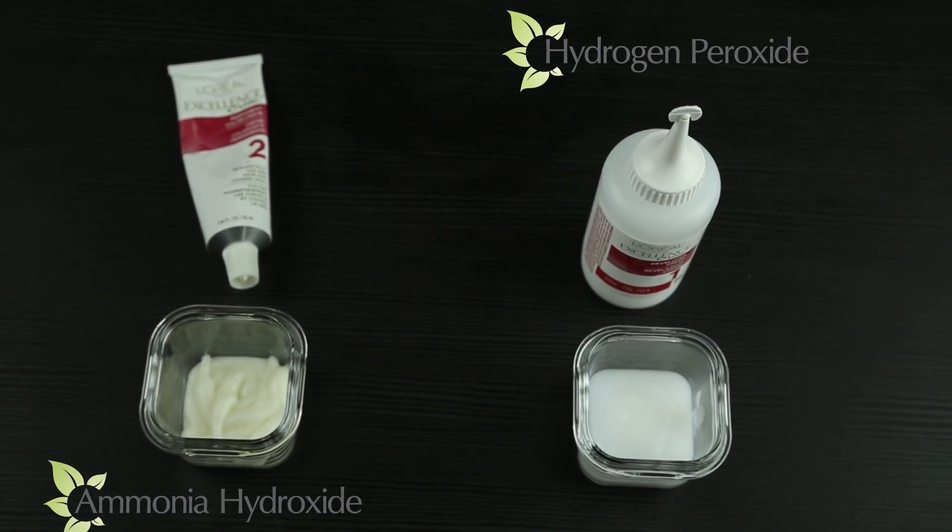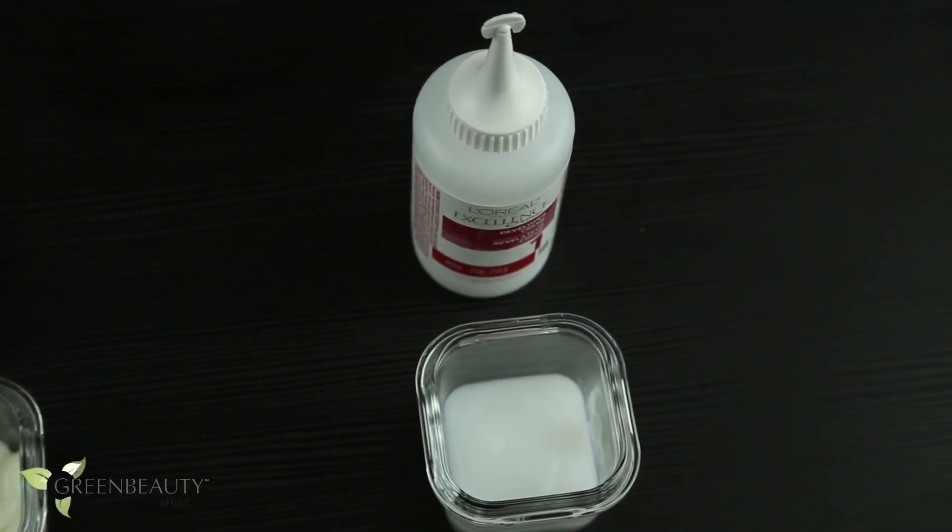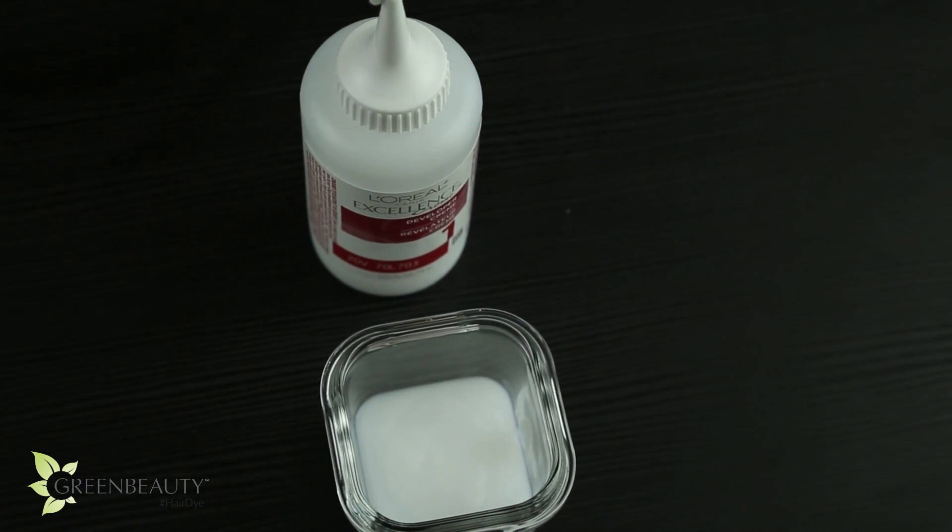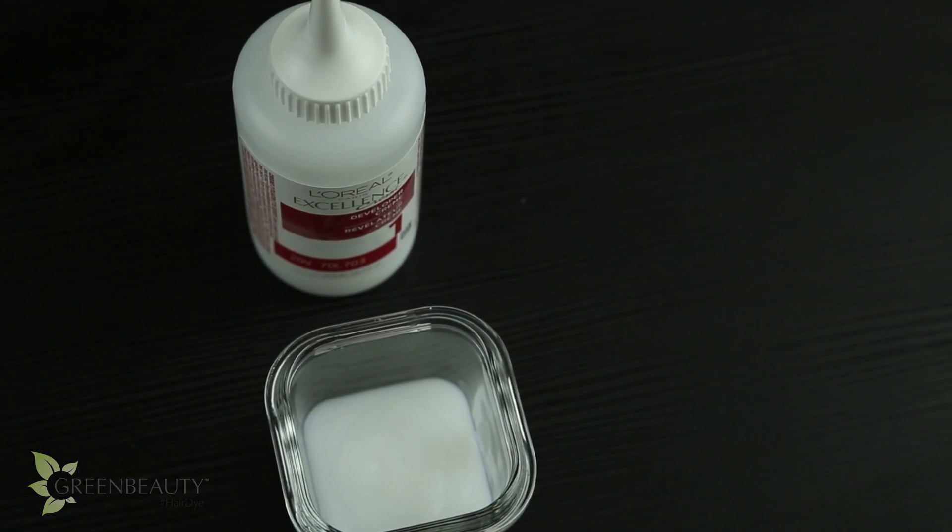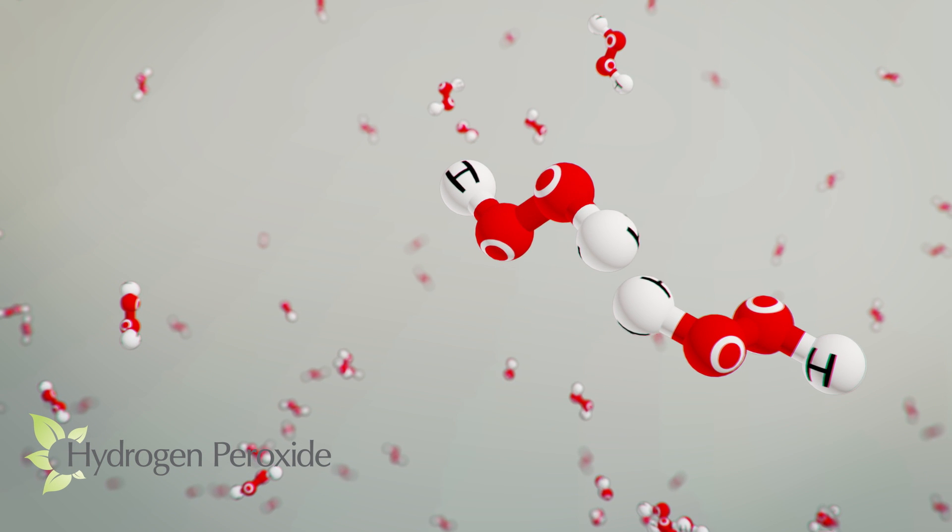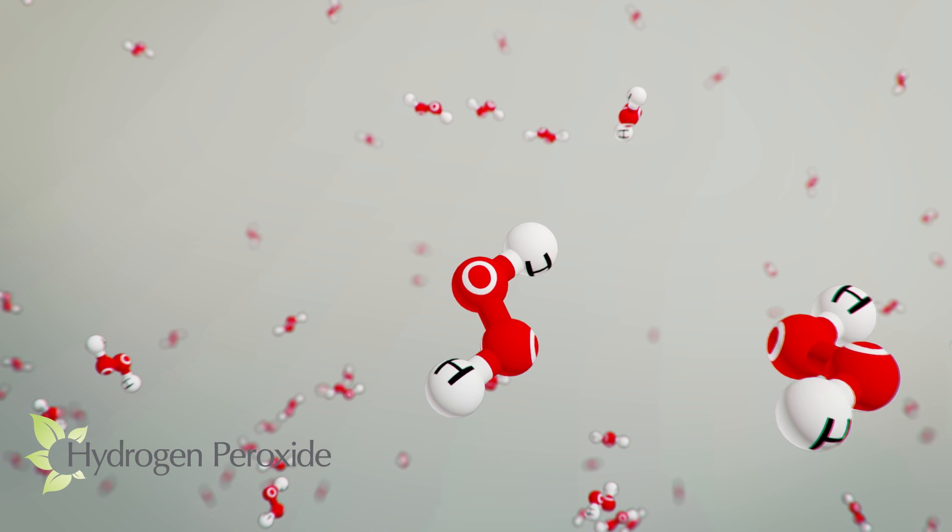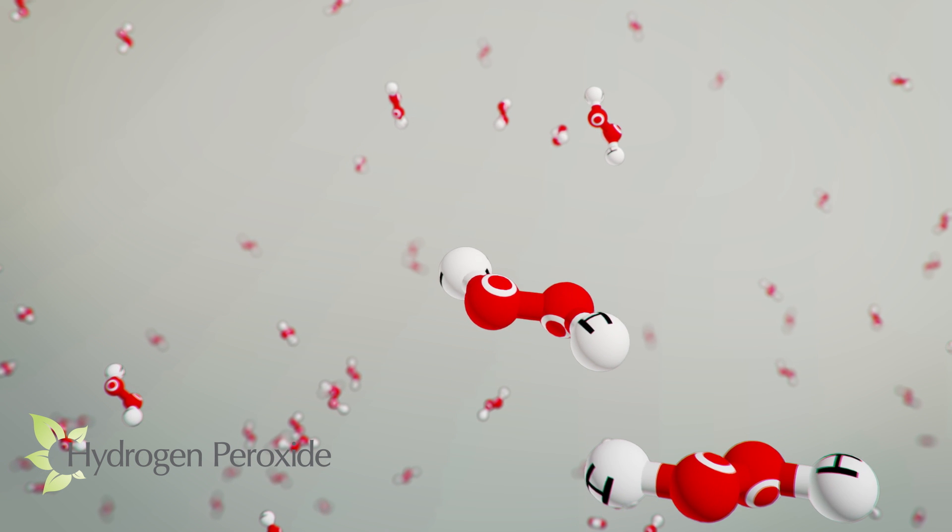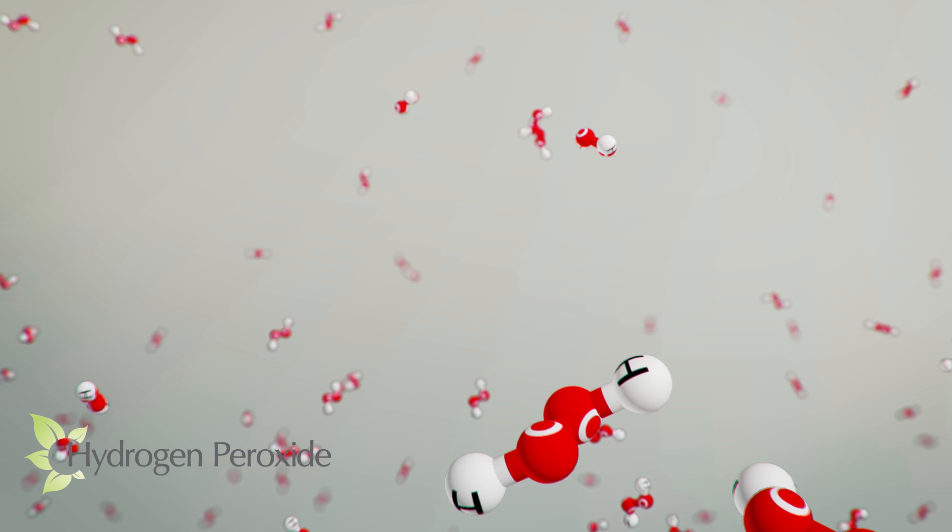The second component to an oxidative permanent hair dye is the hydrogen peroxide, which is used to simultaneously bleach your natural hair pigment and develop the new hair dye color, hence why it's often called a developer. It's usually in the form of a light cream so it can spread easier.